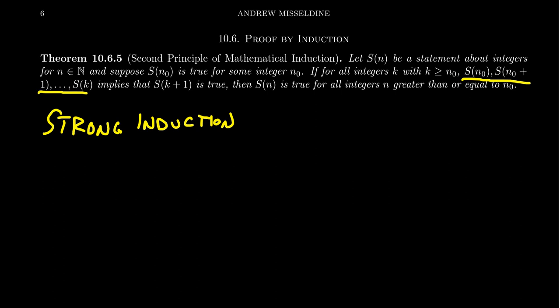With strong induction, you actually assume that all of the statements up until S(k) are true. If that implies that S(k+1) is true, then it's true for all integers greater than n₀. That's what makes it 'strong' — it has a stronger inductive hypothesis. You have more assumptions about the predecessors. For weak induction, you only assume the immediate predecessor has the property; for strong induction, you assume all predecessors have that property.